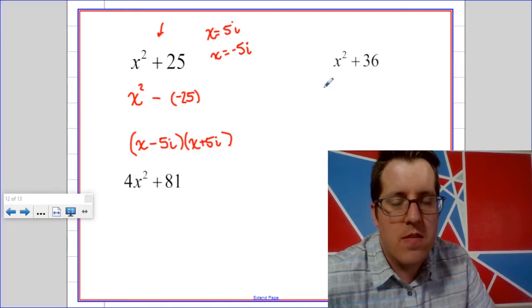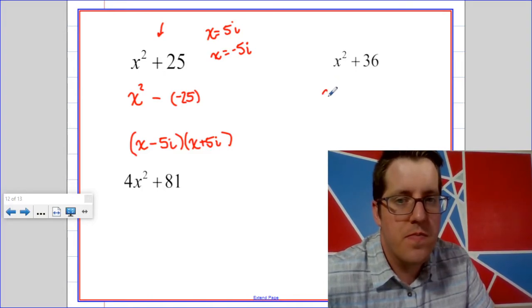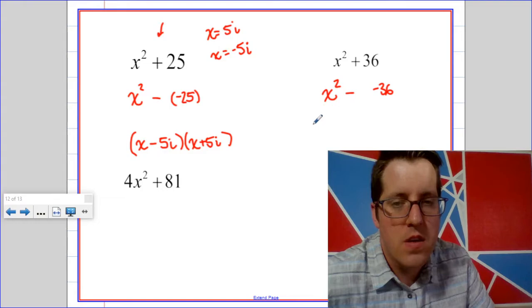So if we were looking at something like x squared plus 36, we could say that's like x squared minus negative 36. So x plus 6i and x minus 6i.